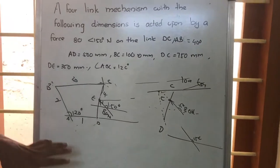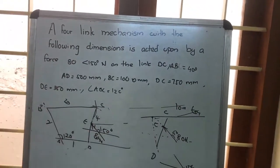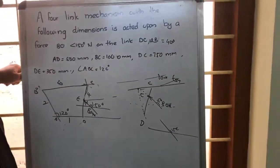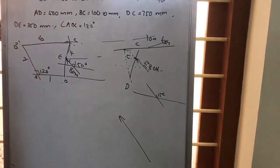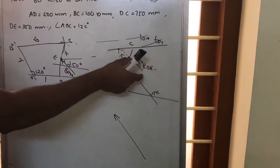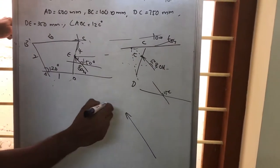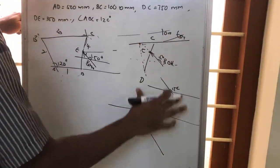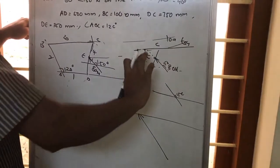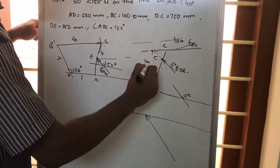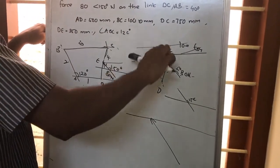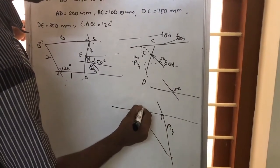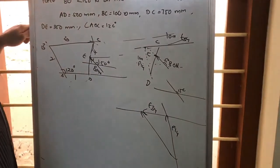Now we are able to get the line of action for every force and we know one force — 80 Newton. We will take a scale: say 80 Newton is represented by 8 centimeter. We will draw that 8 centimeter line parallel to the force direction. Then, draw lines parallel to F34 and F14 lines of action to complete the force triangle.